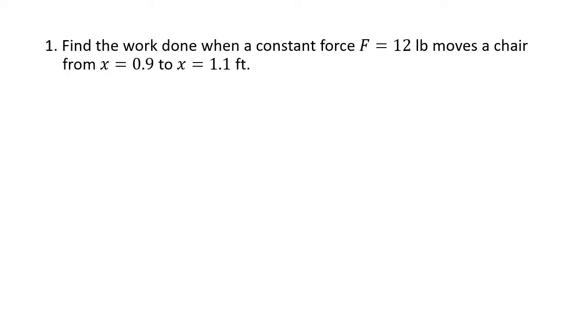In this case, we're just reviewing the basic concept of work, which is when we have a constant force, work is equal to force times distance. So in this case, we've got a constant force of 12 pounds, and we're moving a chair from 0.9 to 1.1, which is a distance of 0.2.